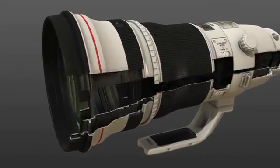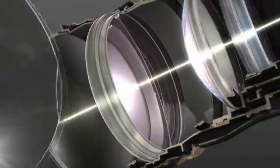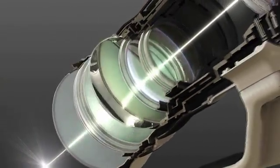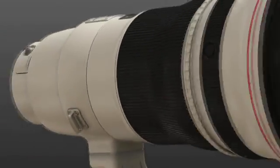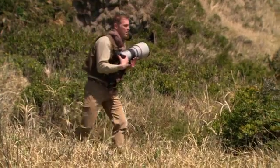Canon's latest 400mm super-telephoto lens utilizes two fluorite lens elements to deliver high image quality in a lightweight design, realizing dramatic improvements in both operability and functionality.